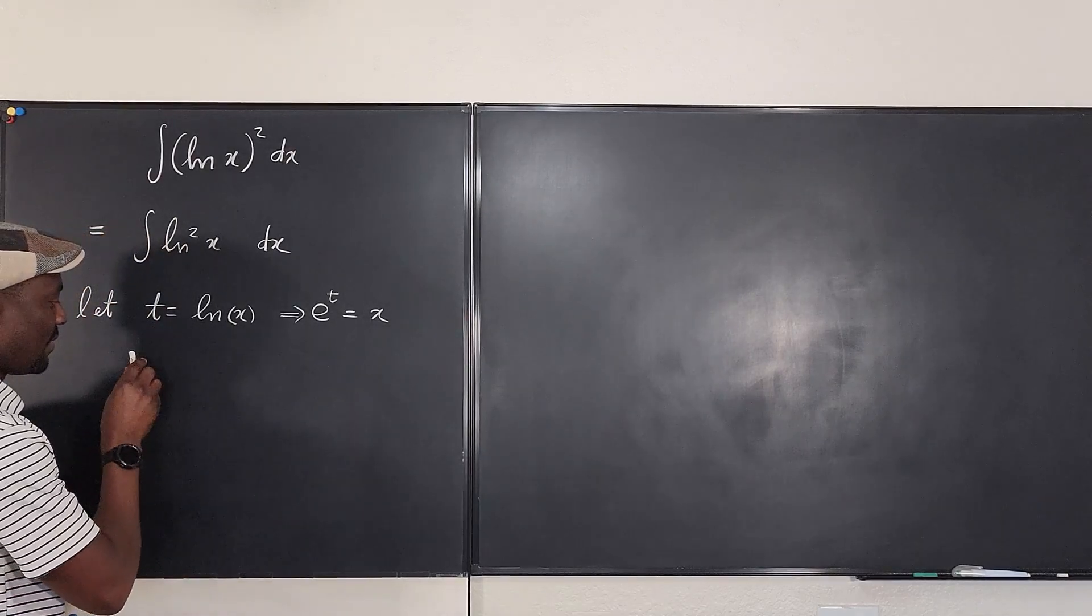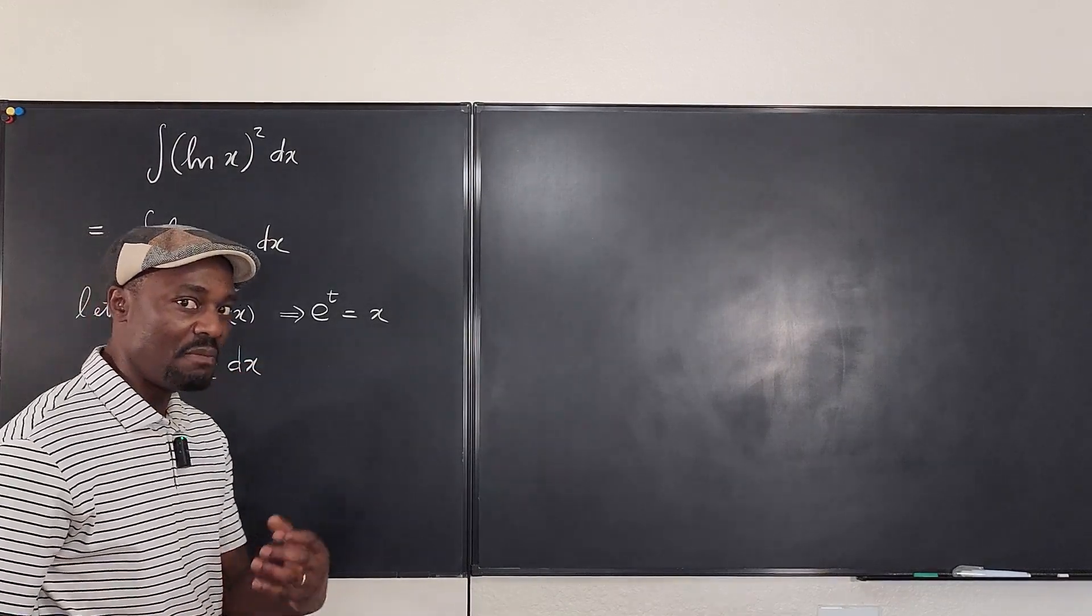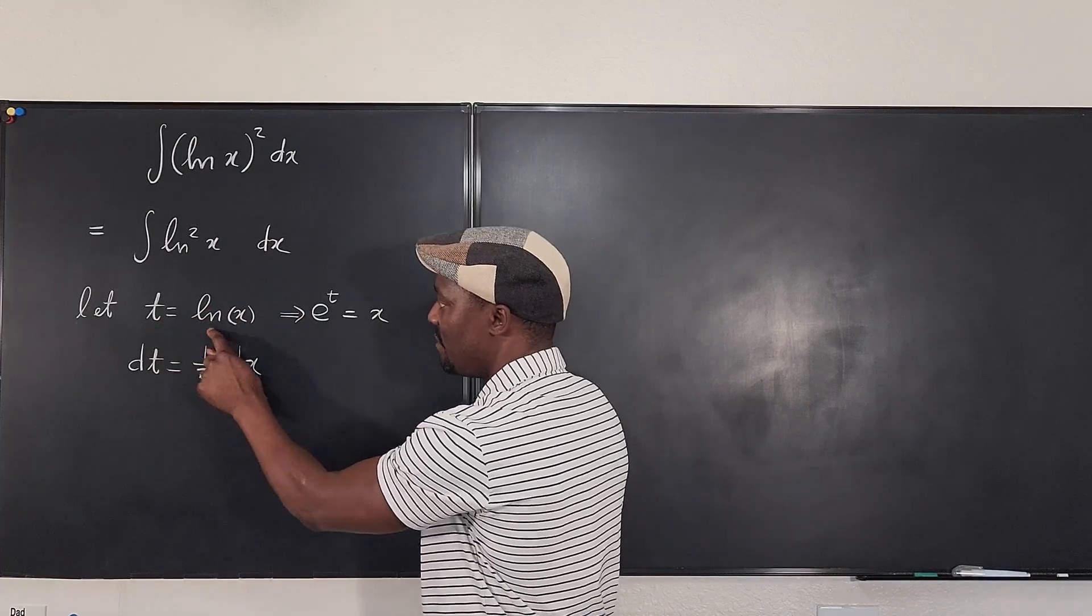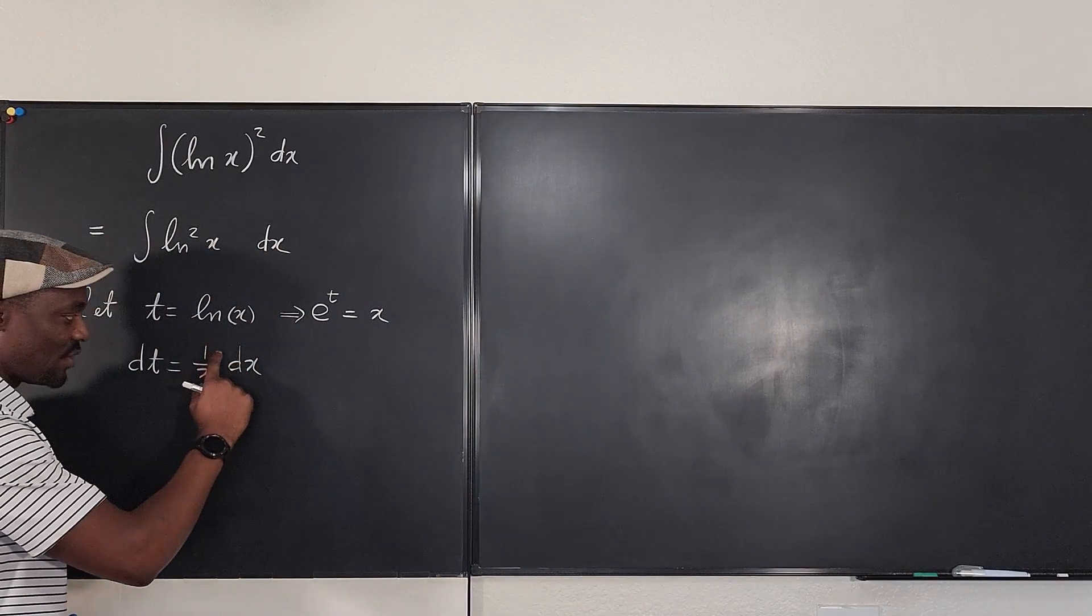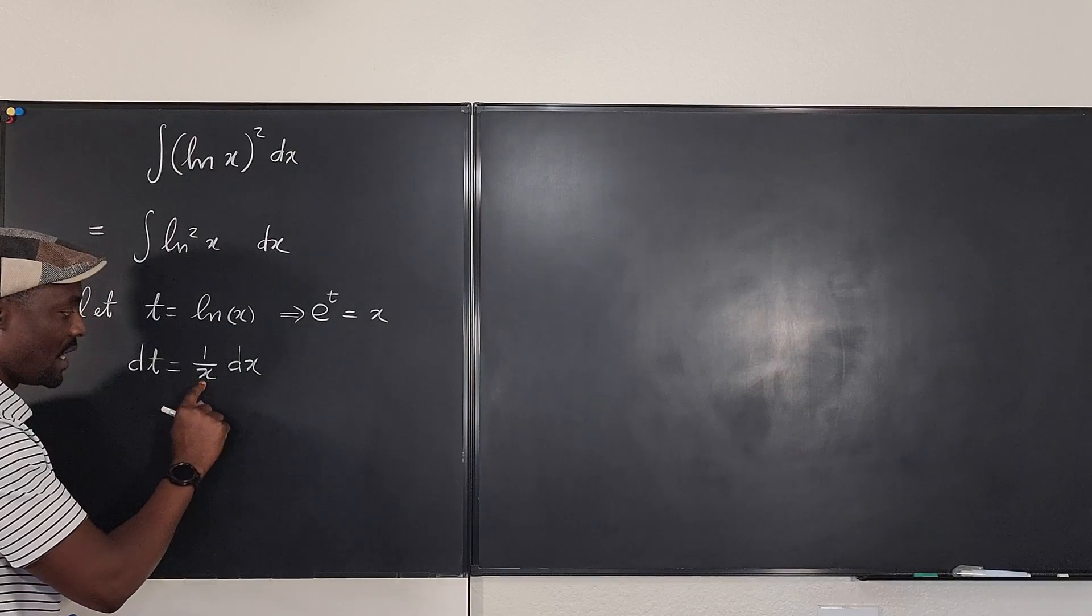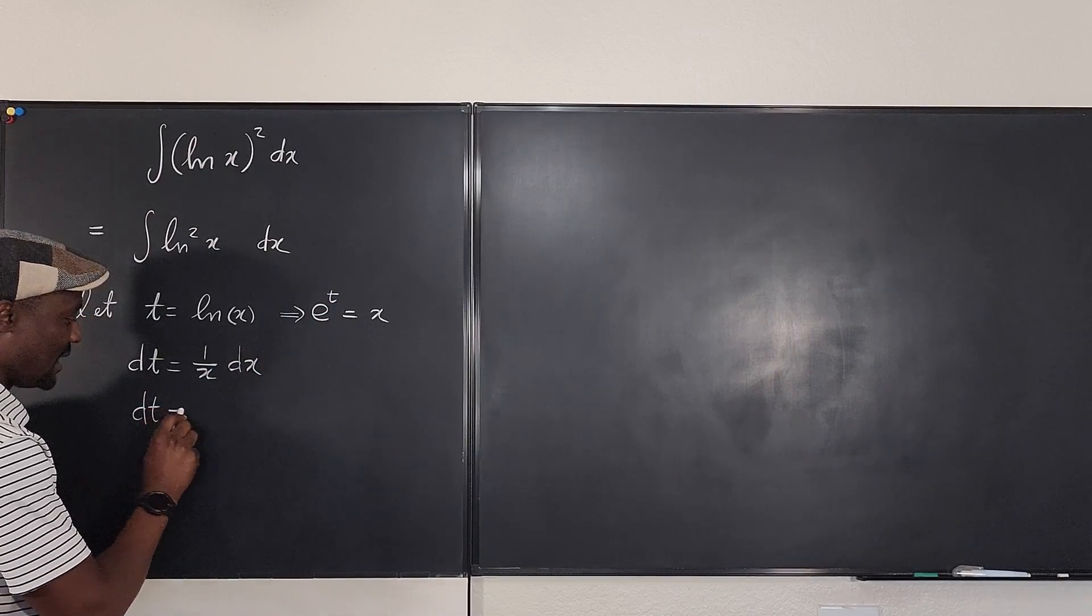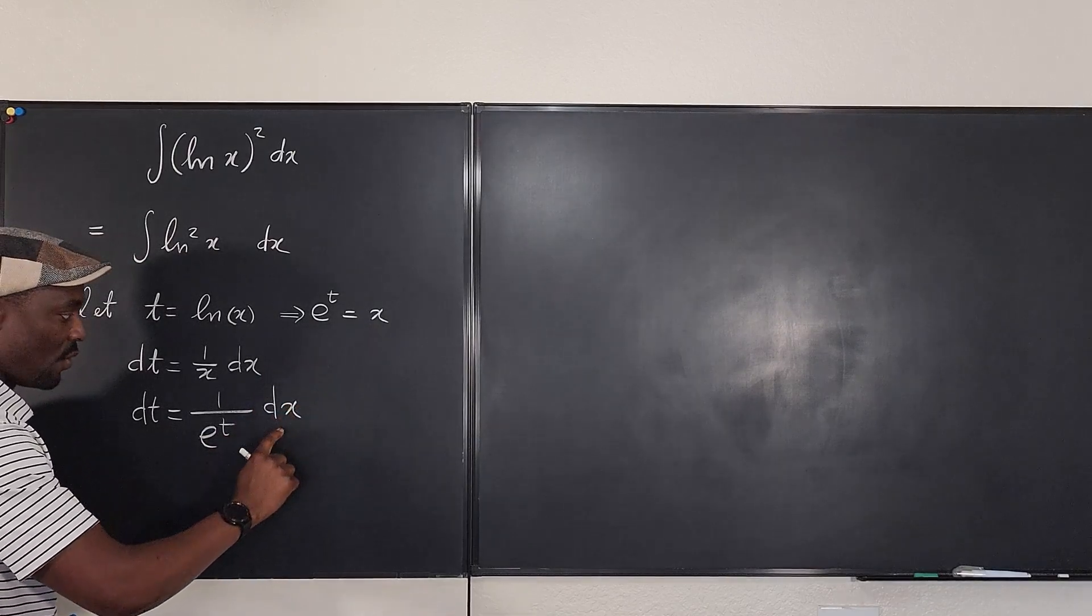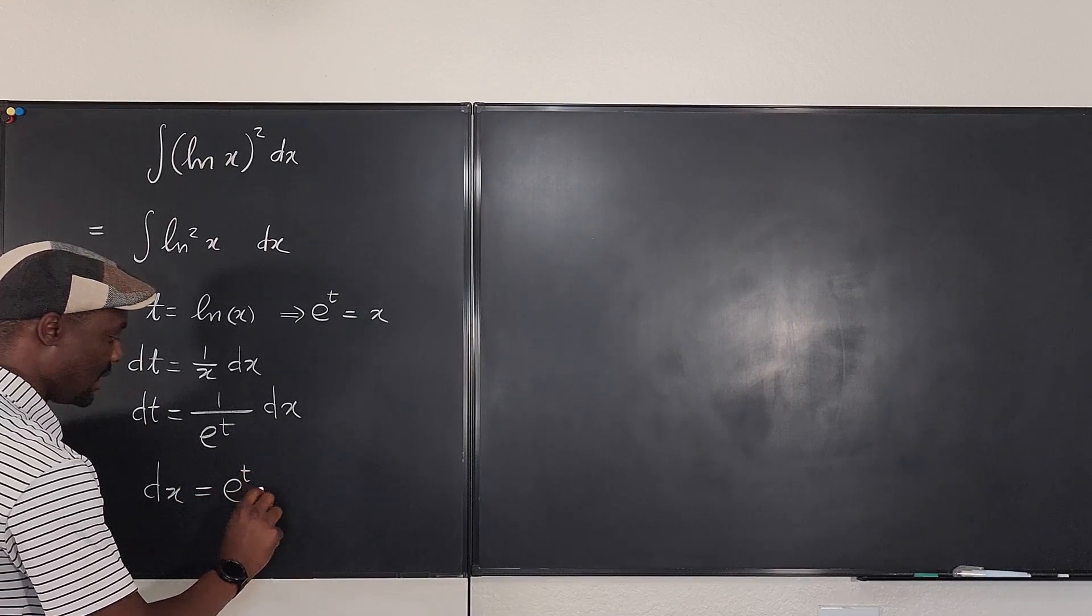Because when I take the derivative of this, dt, if I take the derivative of this, it's going to be just 1 over x dx. And remember that the mission of u substitution is to replace dx. We can no longer use dx because we've said let t be equal to ln of x. So what I need is something in terms of t. How can I write x in terms of t? Well, I know that x is e to the t. So this means that dt is 1 over e to the t dx. So if I isolate dx by multiplying both sides by e to the t, dx will be equal to e to the t dt.